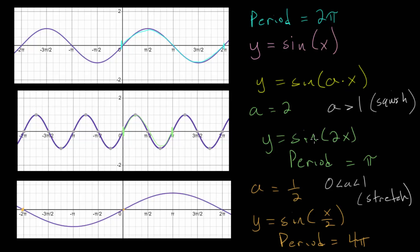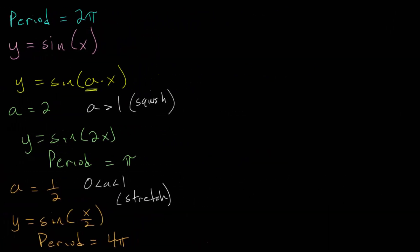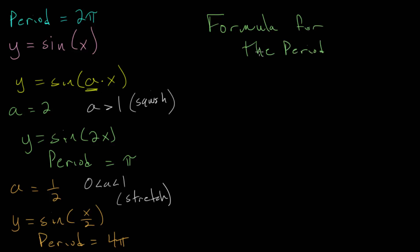This leads to two main questions: what happens if the coefficient a is negative, and is there a formula to determine the period based on a? Looking at different values of a, the formula for the period is 2π divided by the absolute value of a.